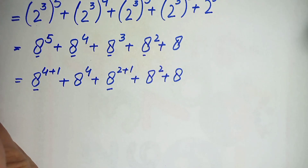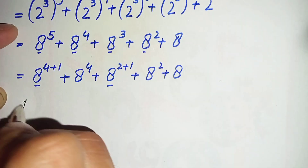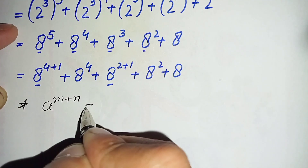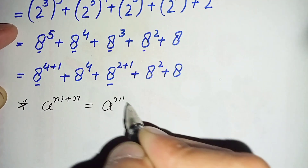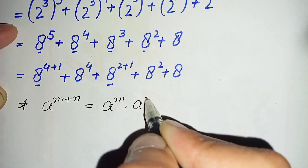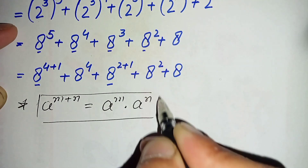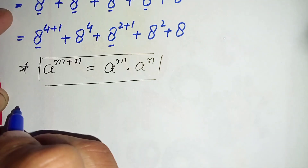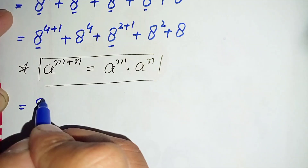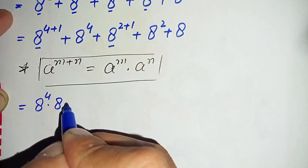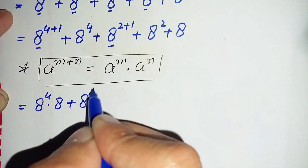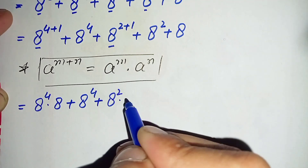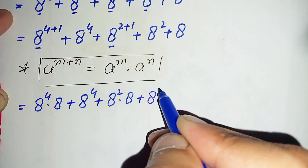We use another exponential math property: a raised to power m+n can also be written as (a raised to power m) times (a raised to power n). Applying this to the first and third terms, it becomes: 8 raised to power 4 times 8, plus 8 raised to power 4, plus 8 raised to power 2 times 8, plus 8 raised to power 2, plus 8.